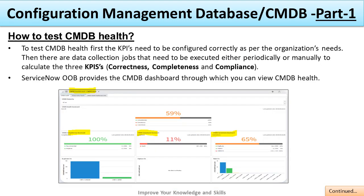How to test CMDB health: First, the KPIs need to be configured correctly as per the organization's needs. Then there are data collection jobs that need to be executed either periodically or manually to calculate the three KPIs. The three KPIs for CMDB health are: Correctness, Completeness, and Compliance.